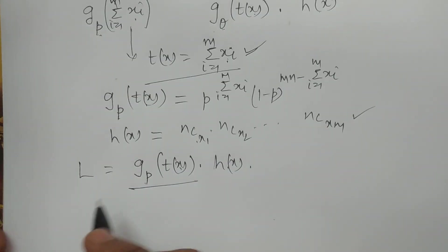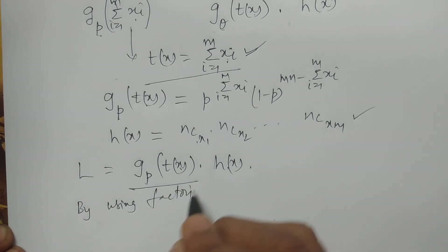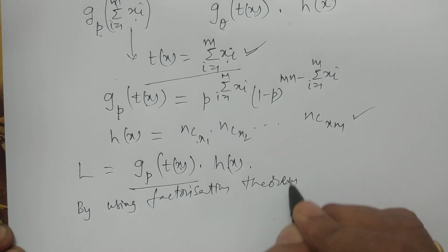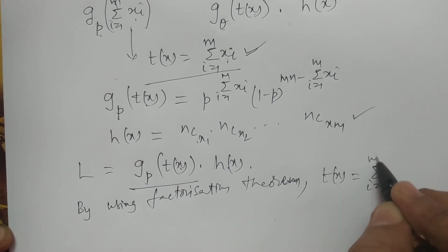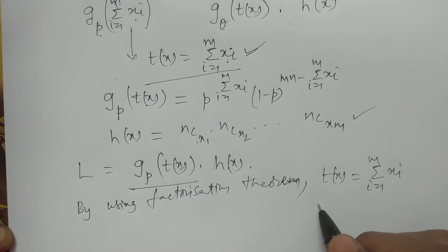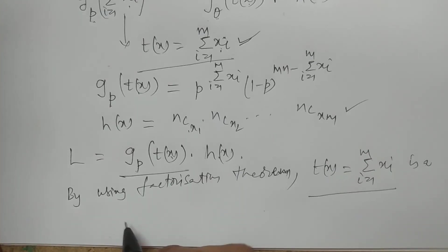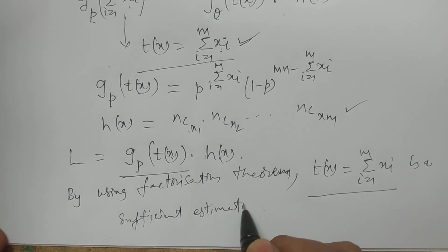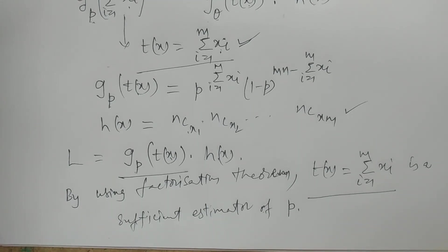Therefore, by using Neyman's factorization theorem, T(x) = Σxi (i=1 to m) — the sum of the sample observations — is a sufficient statistic, or sufficient estimator, of the population parameter p in the binomial population.